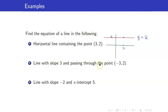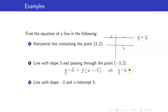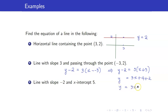Next, a line with slope 3 and passing through the point (negative 3, 2). You're given the slope and the point, so we can use the point-slope form. We have y minus 2 equals 3 times x minus negative 3, which simplifies to y minus 2 equals 3 times quantity x plus 3. In slope-intercept form, we get y equals 3x plus 9 plus 2, so that's y equals 3x plus 11.